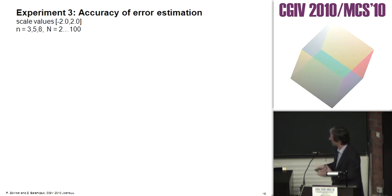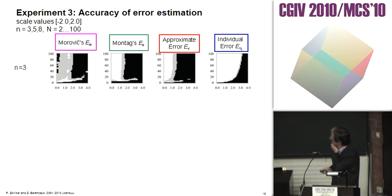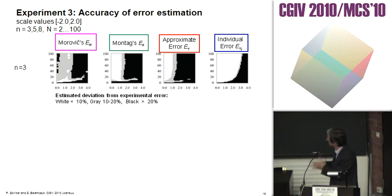In the third experiment, I use scale values from minus 2 to 2 and number of observations from 2 to 100, comparing all four estimations. For n equals 3, Morowick's formula is quite good. White means the estimated deviation is smaller than 10%, that's good. Grey is between 10 and 20%, also acceptable. Black means the error estimation is less accurate than 20%.